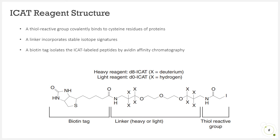The ICAT reagent consists of three elements: an affinity tag, or biotin, used to isolate ICAT-labeled peptides; a linker containing stable isotope signatures that can be differentiated by mass spectrometry; and a reactive group with specificity towards thiol groups. The reagent exists in two forms, heavy and light. In the original ICAT reagent, the heavy form contains eight deuteriums and the light form contains no deuteriums in the linker, resulting in an eight-dalton mass difference.